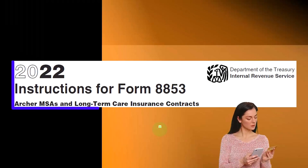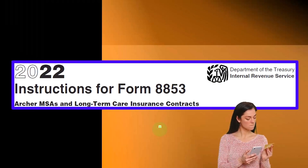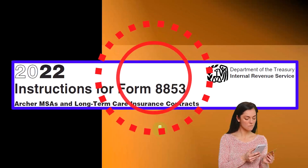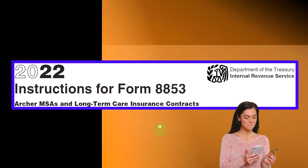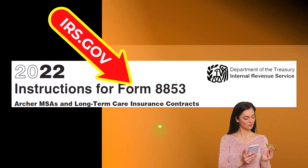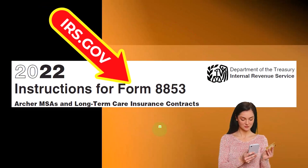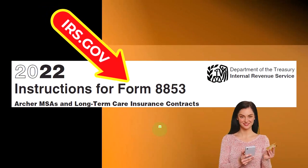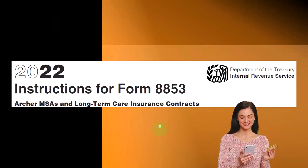Most of this information comes from instructions for Form 8853, Archer MSA, Long-Term Care Insurance Contracts, which you can find at the IRS website, irs.gov.